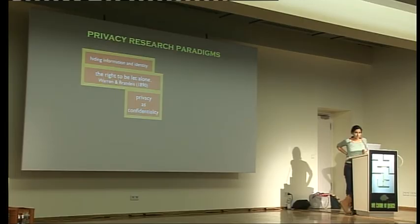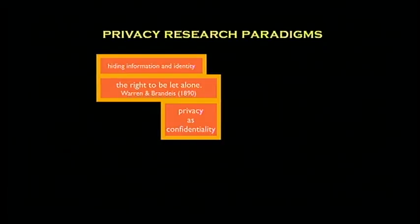Within computer science, I looked at all the research done under the title of privacy. What I found when I looked at these papers is that they rely on very different assumptions and have different objectives. I found three different privacy research paradigms. When I talk about a research paradigm, I'm talking about the implicit assumptions that researchers use to do their research — a set of assumptions you work with so that you can improve your research.